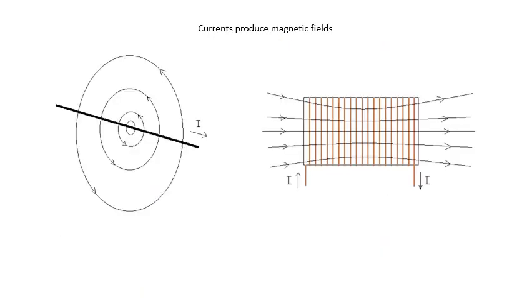Currents produce magnetic fields. A long straight wire carrying a current actually produces a circular field — not very strong. So what you do is you wrap it around a tube and then you get a much stronger field, which kind of looks a bit like the field due to a bar magnet. Wrap loads of turns around a coil and you get a strong magnetic field.